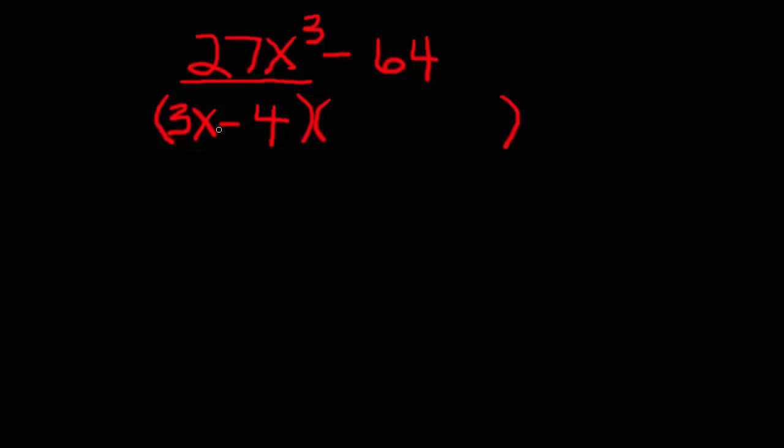To find the first term, square the first term from the binomial. So 3 times 3 is 9, x times x is x squared. Use the opposite sign of what we used here, so we used minus, we use plus.